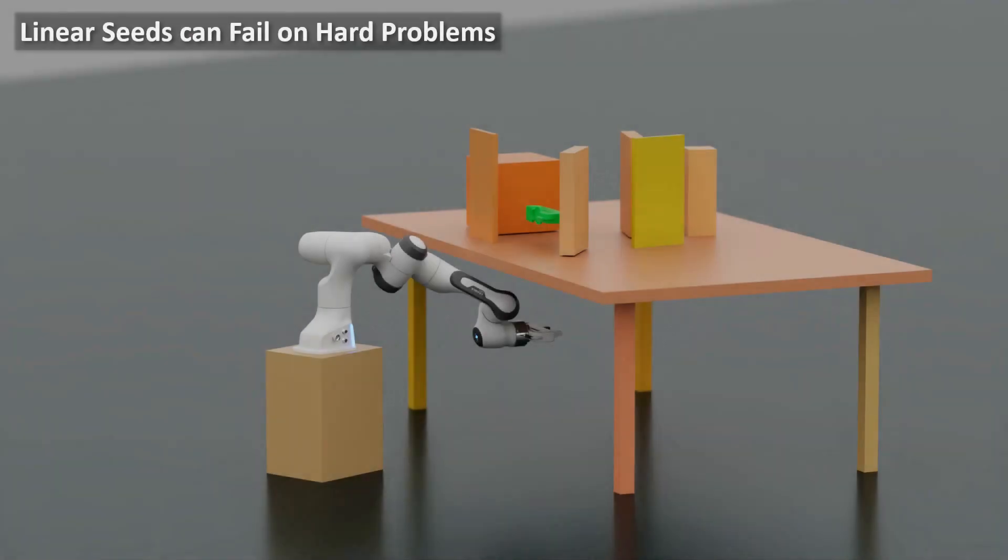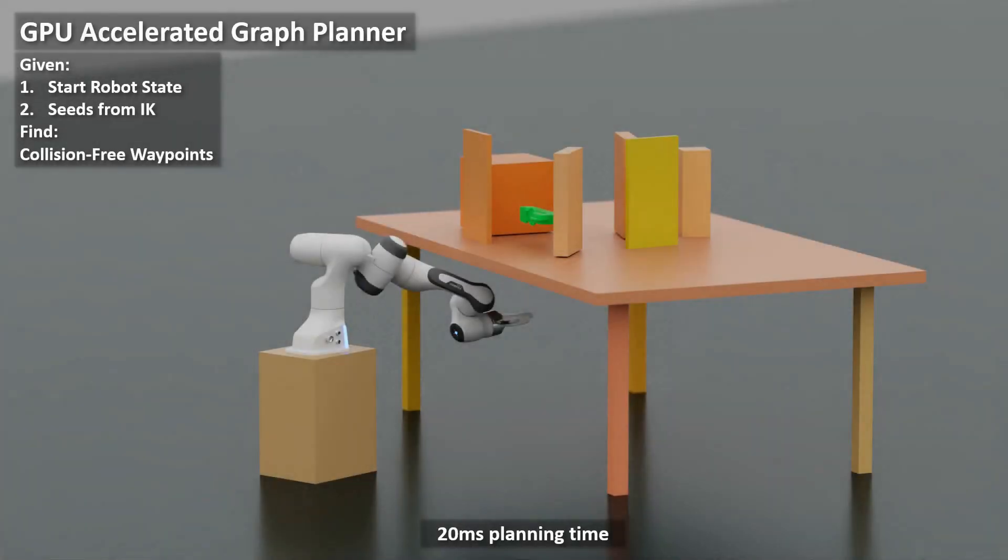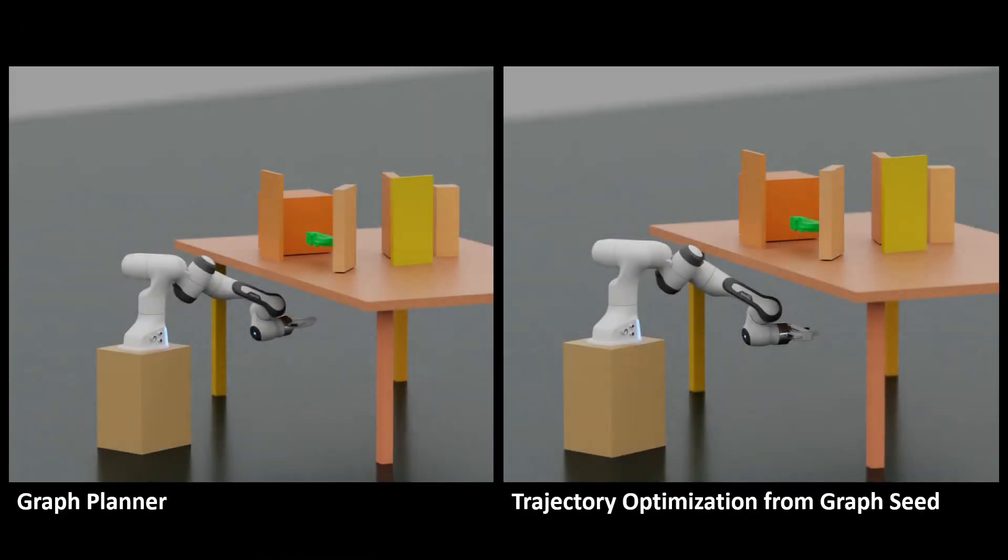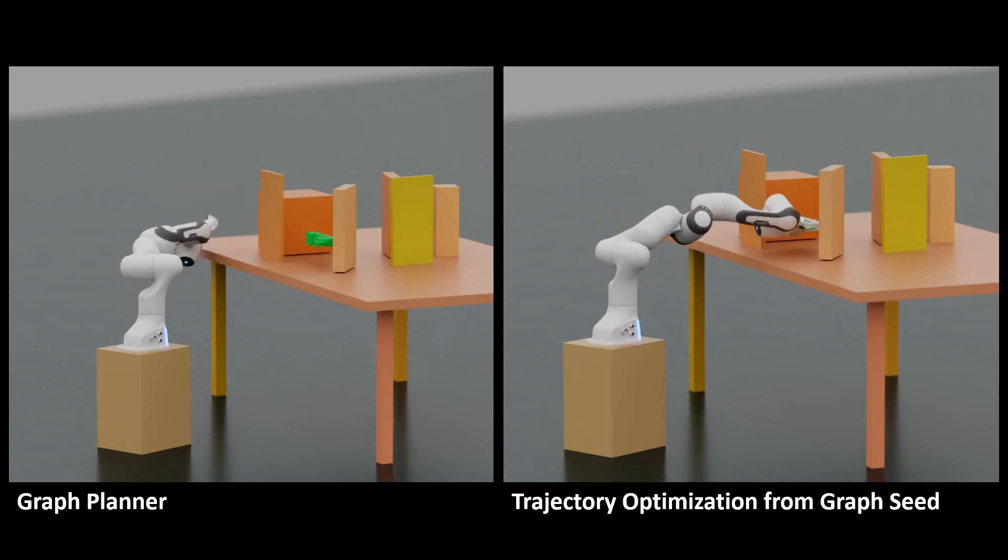In very hard problems, trajectory optimization can fail with linear seeds as seen here, where the Franka Panda is unable to go around the table to reach the target. To help in these situations, Kurobo implements a GPU accelerated graph planner that builds a graph by creating collision-free edges in parallel, generating geometric paths within 20 milliseconds. The path from the graph planner is used as a seed in trajectory optimization, which outputs a smooth trajectory, as shown on the right.